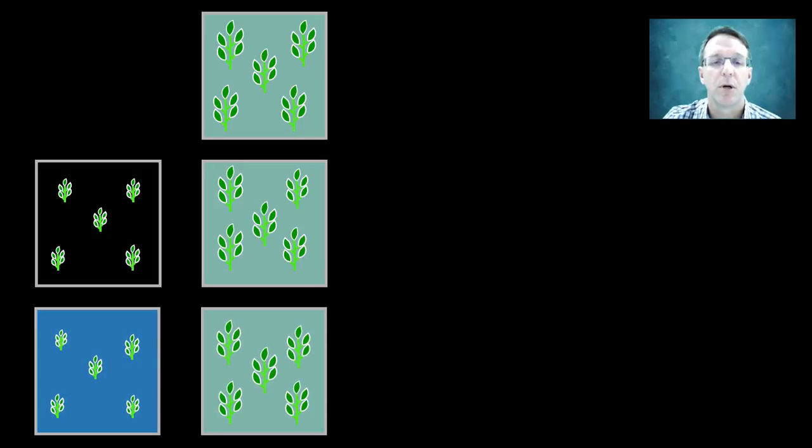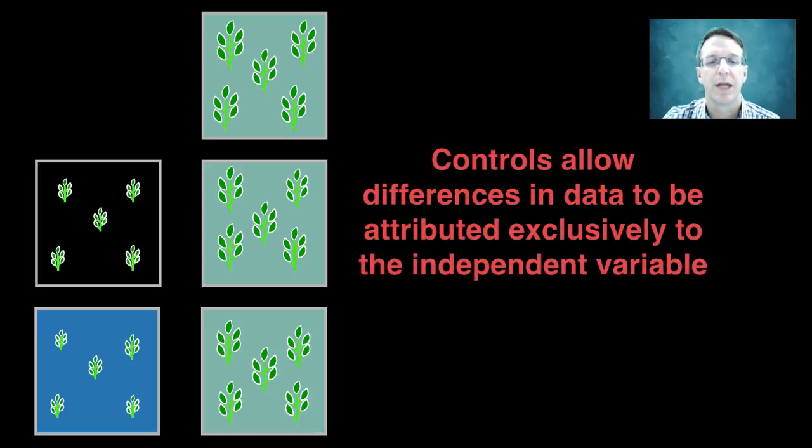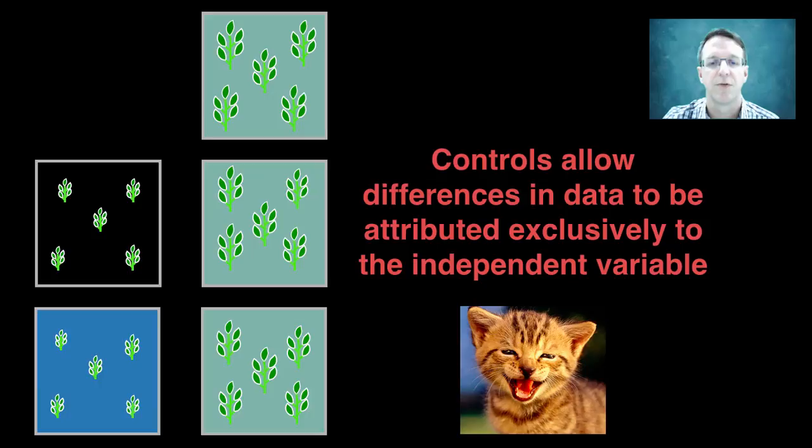In other words, a proper control group is treated exactly the same as the experimental group, except for the absence of the independent variable. And that way you can ensure that any differences seen between the two can be attributed exclusively to the independent variable. And the skeptic is satisfied.